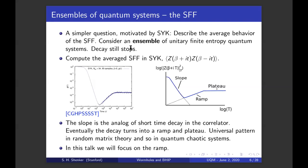But there's a simpler question motivated by the Sachdev-Ye-Kitaev model. It's one of the many things that the Sachdev-Ye-Kitaev model has brought to quantum gravity. And that question is describe the average behavior of the spectral form factor. What that means is consider an ensemble of quantum systems. For instance, different choices of the random couplings in the SYK model. And the decay still stops.